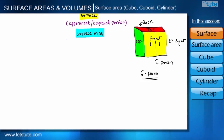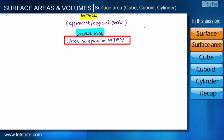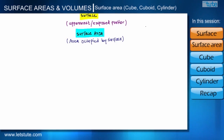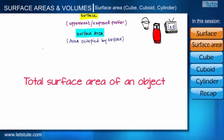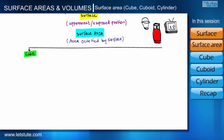So what do we call a surface? The uppermost or exposed portion of any object. And what do we call surface area? The area occupied by that surface. We are actually surrounded by objects like a bucket, TV, and gas cylinder, so in this session we will discuss how to find out the total surface area of some important objects.